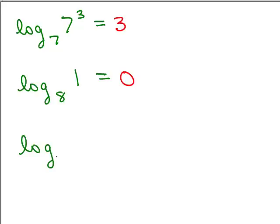How would we do the log of 7 to the 7 cubed? What would that equal? That would have to equal 3. 7 cubed equals 7 cubed. Let's try another one. How about the log base 8 of 1, or the log of 1 base 8, depending how you read it. What would that equal? Well, when you take the log of 1, it's always 0.